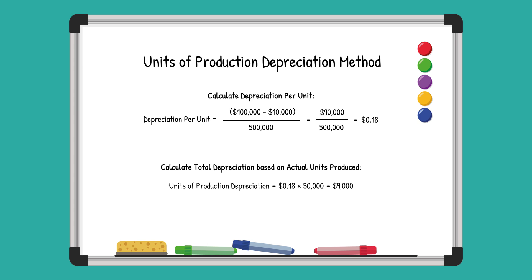Let's take a look at an example. A company purchased a machine for $100,000, and this machine is expected to have a total production capacity of 500,000 units. In the first year, the machine produces 50,000 units. Assuming the machine has a $10,000 salvage value, the depreciation per unit is $90,000 divided by 500,000 units, which equals 18 cents per unit.